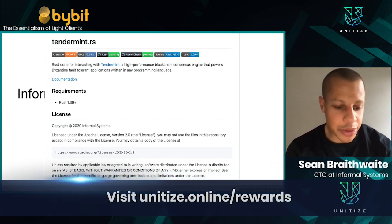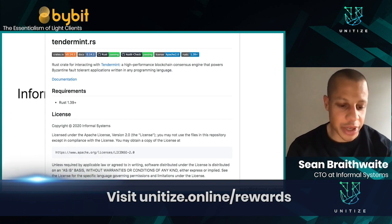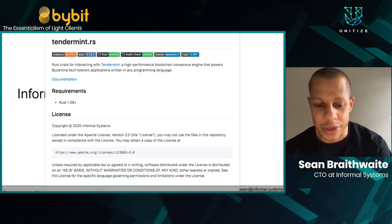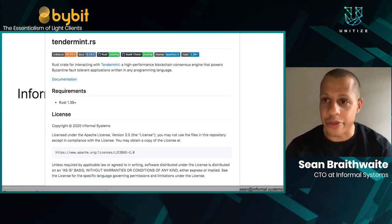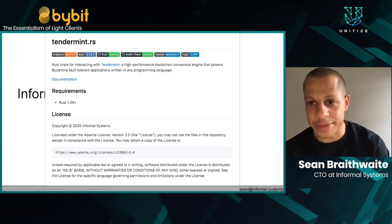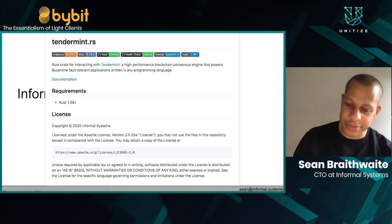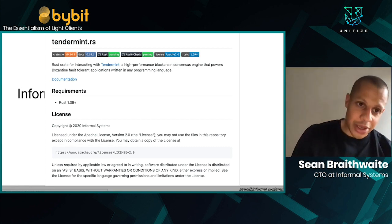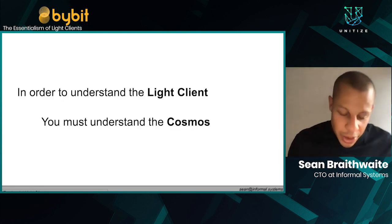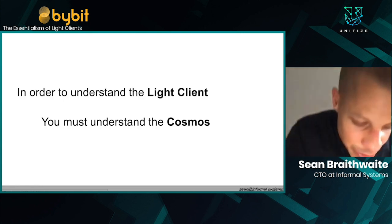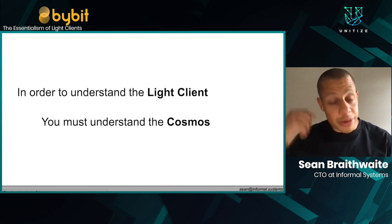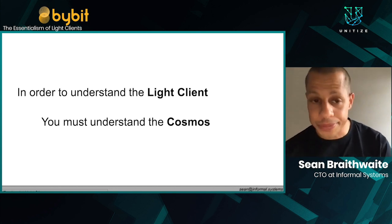The first implementation of Tendermint, which was very essential to launching the network, was not built for formal verification, and we wanted to try and build one that was. So before we talk about what we built, I think we need to talk about what the greater objectives of the ecosystem are.